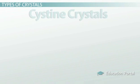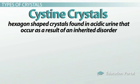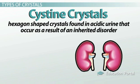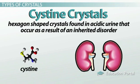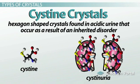Other crystals that can be found include cystine crystals, which are hexagon-shaped crystals typically found in acidic urine that are associated with an inherited disorder. This disorder results in the inability of kidneys to reabsorb an amino acid called cystine, resulting in cystinuria, or the accumulation of cystine in the urine. Cystine also causes, not surprisingly over time, the formation of kidney and bladder stones.